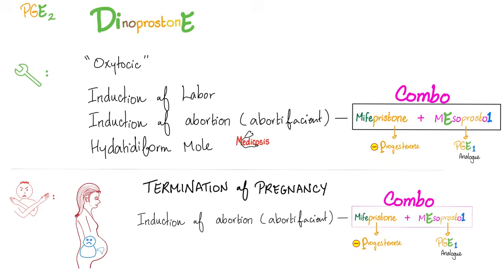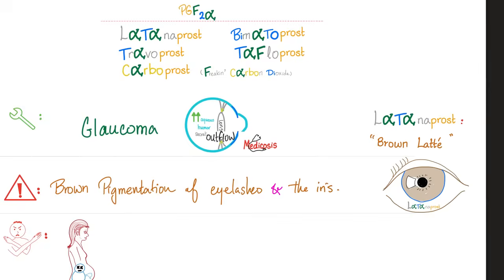How about prostaglandin F2-alpha, such as latanoprost? We use it for glaucoma because it increases aqueous humor outflow — so the aqueous humor will be absorbed and the pressure inside the eye will go down, decreasing intraocular pressure. Side effects of latanoprost include brown pigmentation of the eyelashes and the iris — think of latanoprost as a brown latte. Contraindications? Pregnancy.